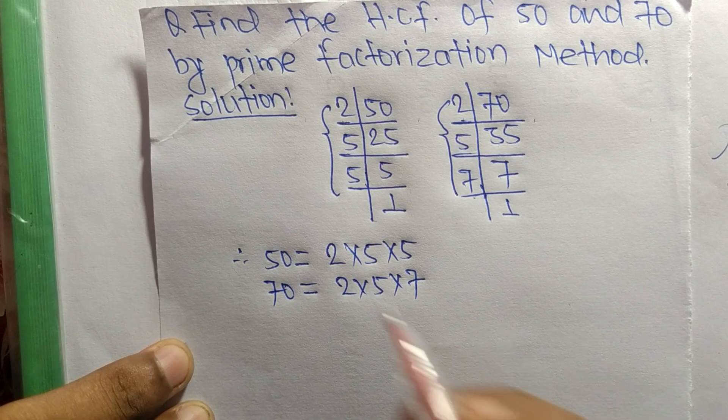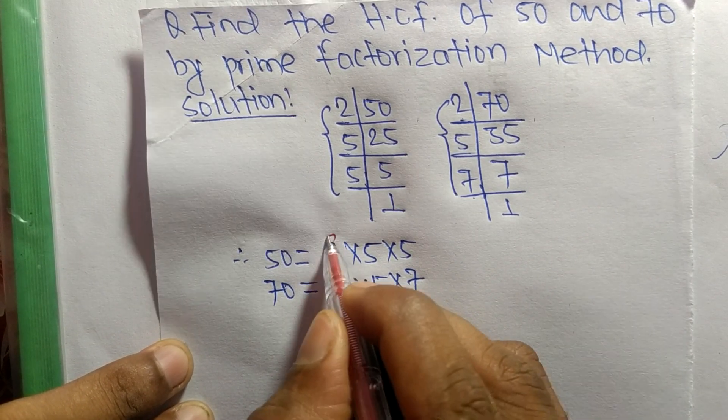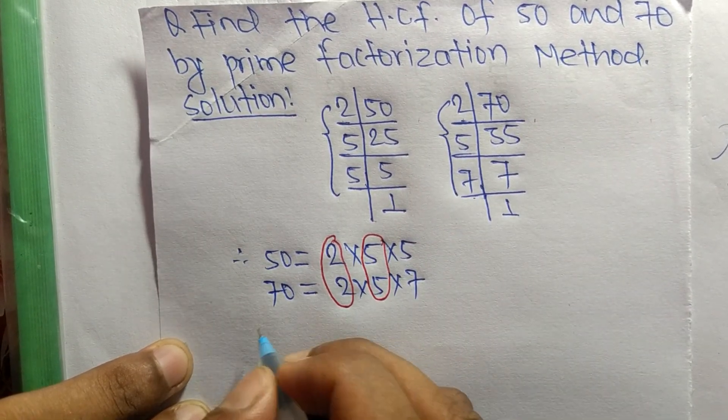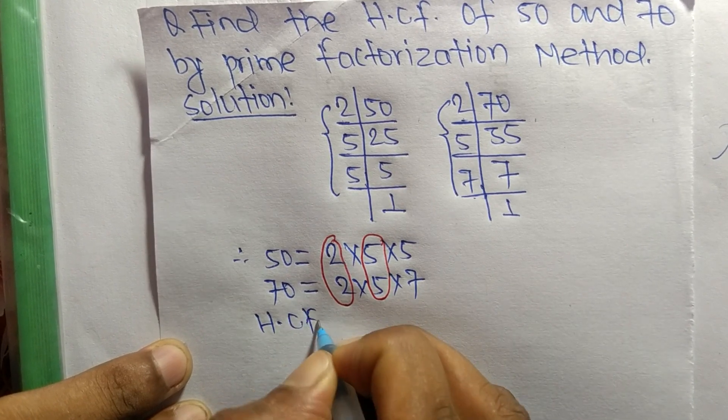So now we select the common factors in these prime factors. The common factors here are 2 and 5. So the HCF is